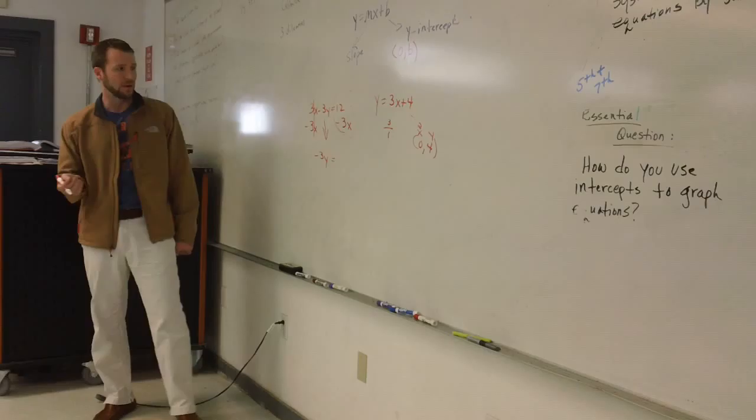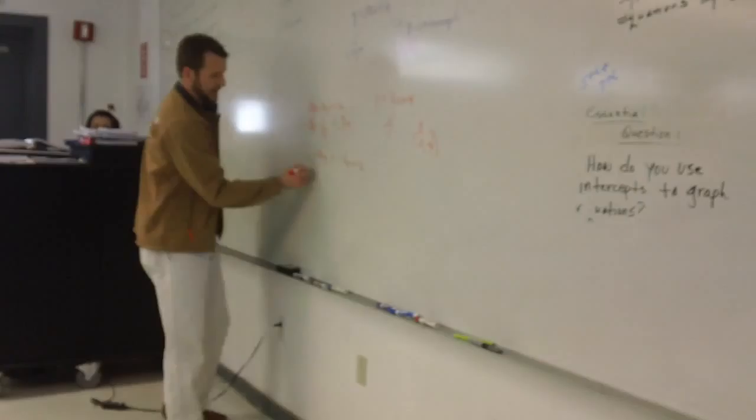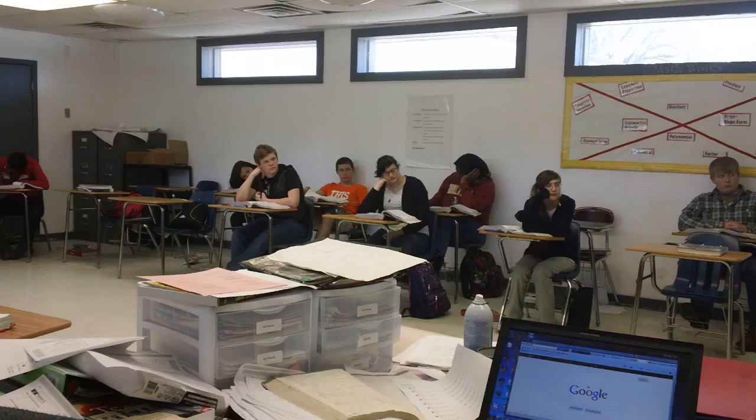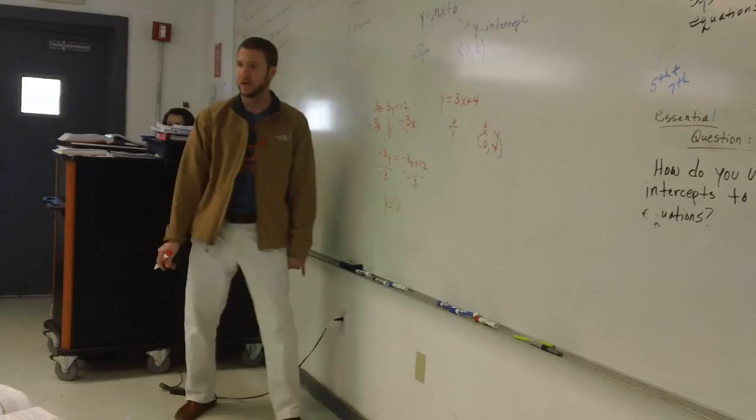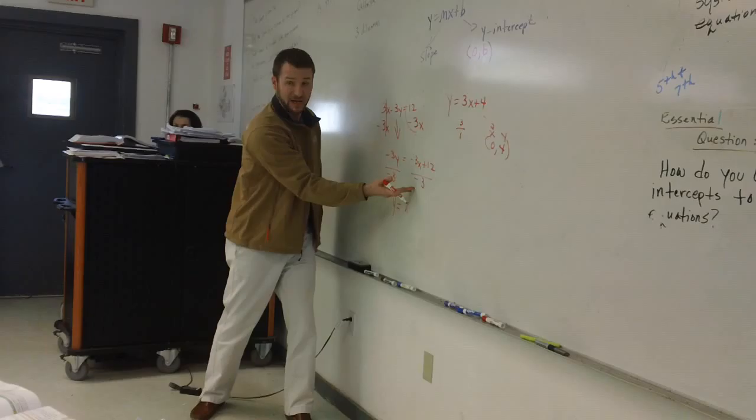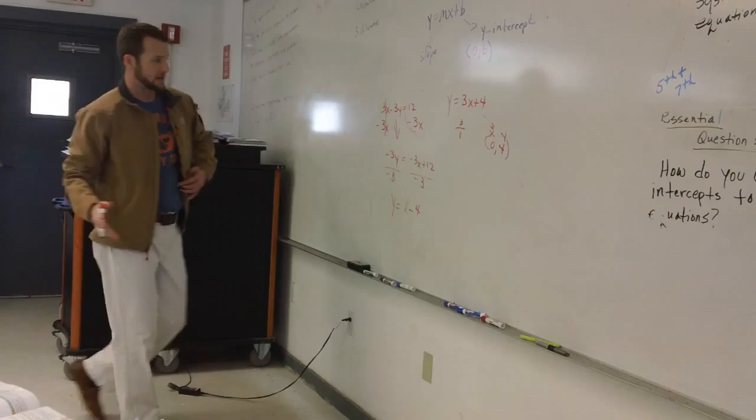Now what happens right here? Can I combine those? No. Why can't I combine them? They're not like terms. So how would I write that? You put the variable first, and then -3x + 12. Exactly. Now am I done? No. Divide by negative 3. I've got to divide by negative 3 on both sides. This gives me y equals what? One. One x. So you just write it as x, correct, because you don't see it in the book going 1x. Because negative divided by negative is positive. And what happens here? Minus 4. Divide 12 by negative 3, and it's minus 4.